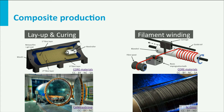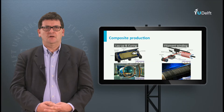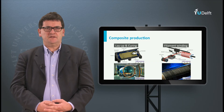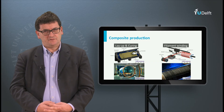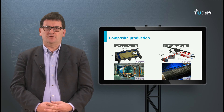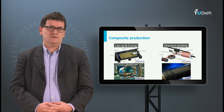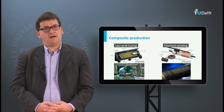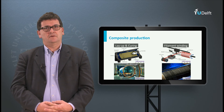Another process is filament winding. Filaments or fibre bundles are wound around a mandrel or a mould. Before the fibres are positioned on the mandrel, the fibres are impregnated by resin. Therefore the fibres are guided through a resin bath. Once all fibres are impregnated and positioned onto the mandrel, the resin needs to be cured. This will be done in an oven, so at high temperature but ambient pressure.